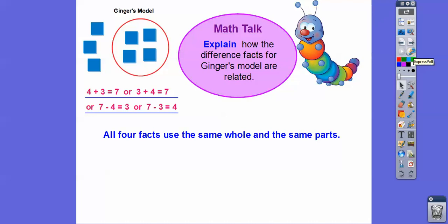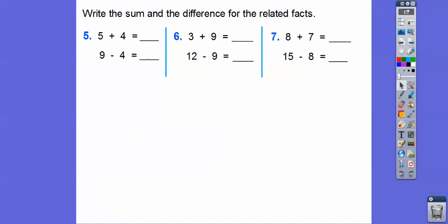Remember, addition and subtraction use the same whole and same parts. For example, 5 plus 4 — here's 5 fingers, here's 4 fingers. How many fingers are there? 5, 6, 7, 8, 9. So 5 plus 4 equals 9. Here's 9 — it's the whole. So if we take away 9 minus this part right here, it's going to be this part. So 9 minus this number is going to equal this number.